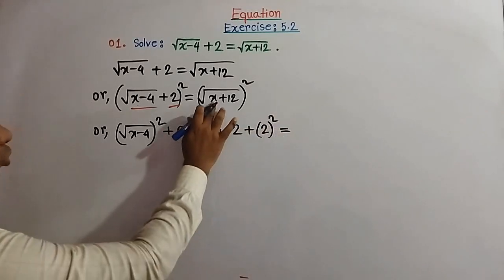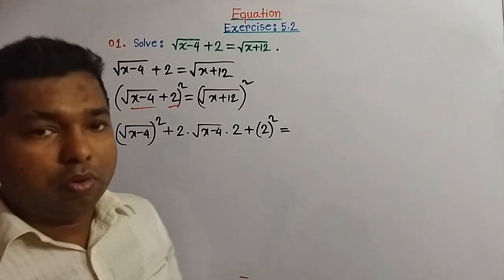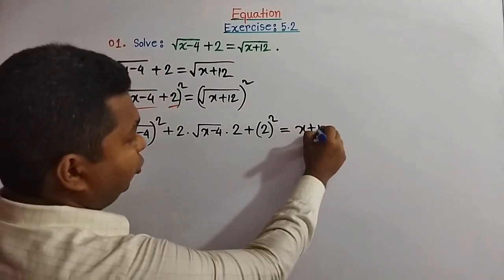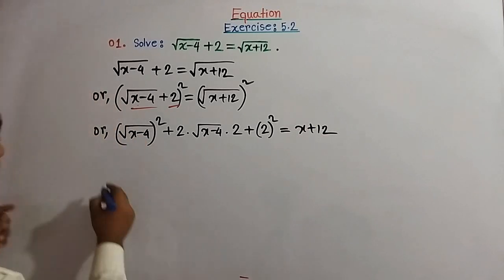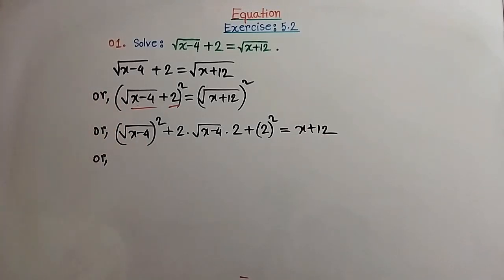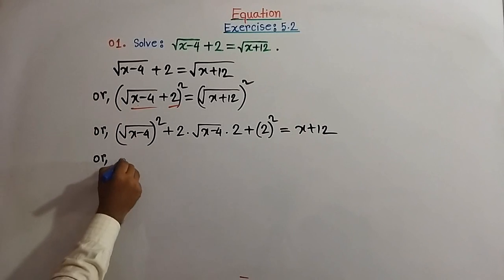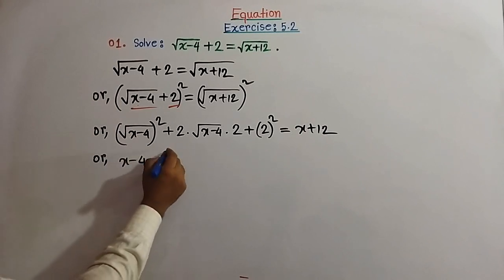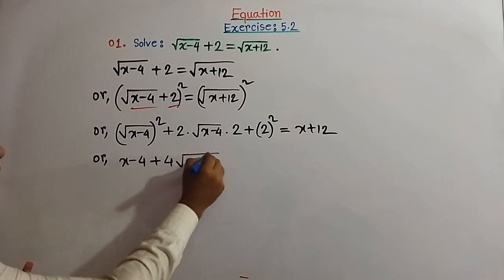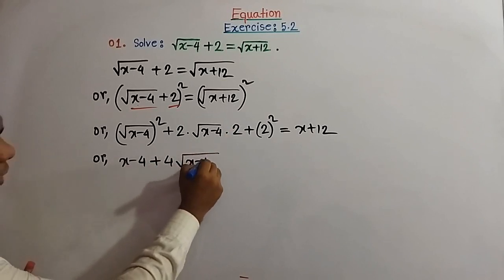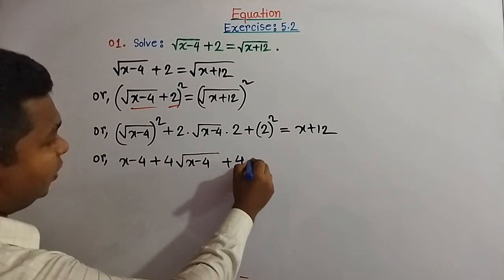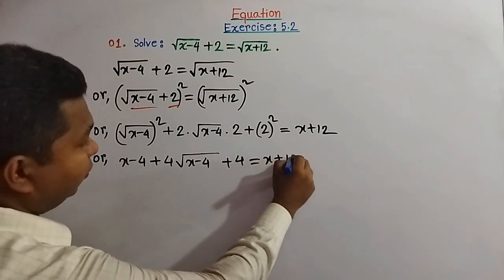Expanding: (x minus 4) plus 2 times 2 times square root of (x minus 4) plus 4 equal to x plus 12. So we get x minus 4 plus 4 times square root of (x minus 4) plus 4 equal to x plus 12.